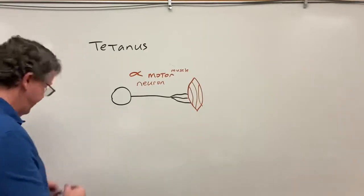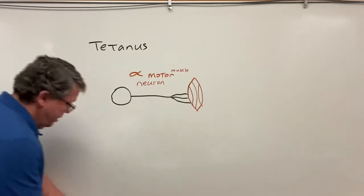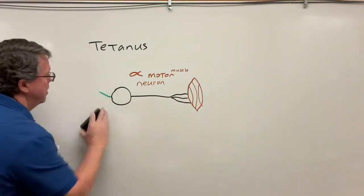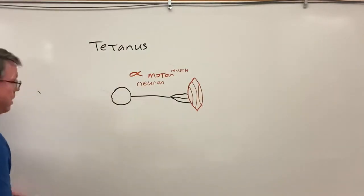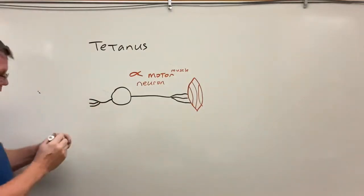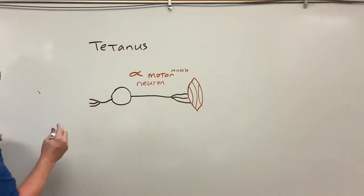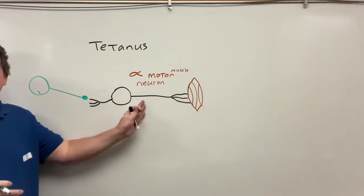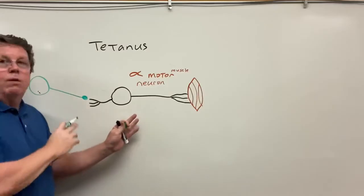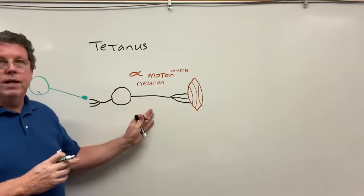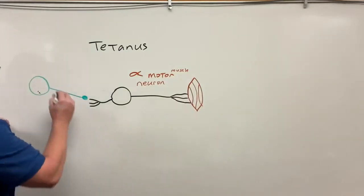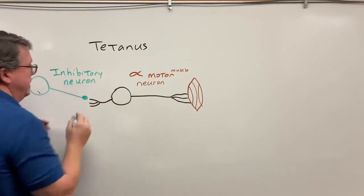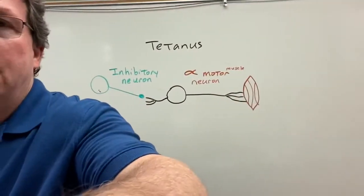We don't want our muscles contracting all the time, so you also have a type of cell that works in the opposite way — an inhibitory neuron called a Renshaw cell. The Renshaw cell inhibits the alpha motor neuron, causing the muscle to relax.